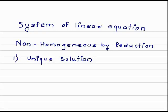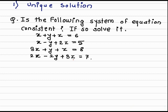Today we study systems of linear equations. From that, we look at the non-homogeneous system and solve it by the reduction method. The first type is the unique solution. We go through one example having a unique solution. The system of equations is: x plus y plus z equals 6, x minus y plus 2z equals 5, 3x plus y plus z equals 8, and 2x minus 2y plus 3z equals 7.